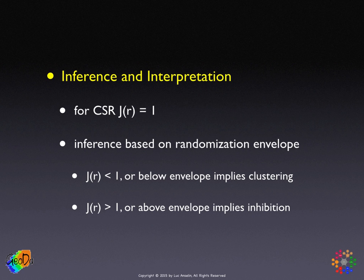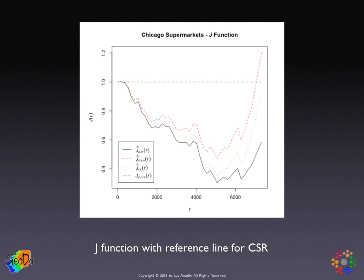For the Chicago example, the blue dashed line is a horizontal at 1. The black curve is clearly below, and the green curve is also below except at the very largest distances, where the red curve starts going above 1. This is not an uncommon pattern. Because the black line is below the horizontal blue line, this would again suggest clustering.